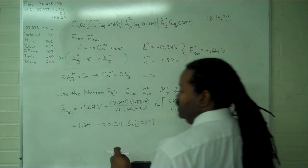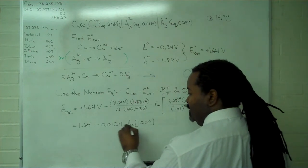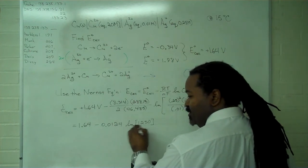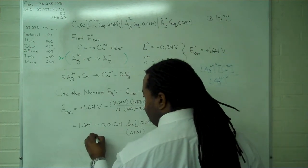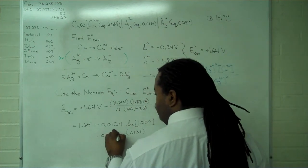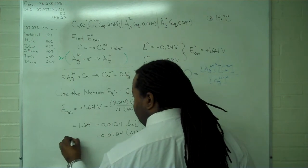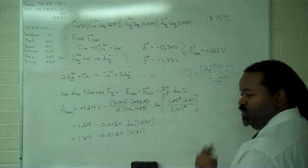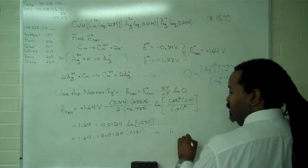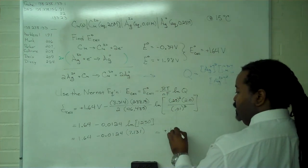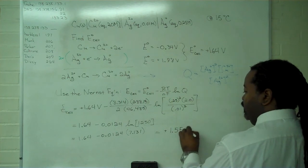So ln of 1,250 is 7.131. Copy down all of our other values. And so now, when we simplify this all the way out, what we get is a positive 1.55 volts.